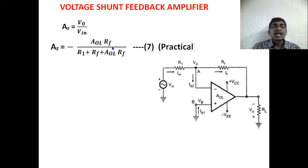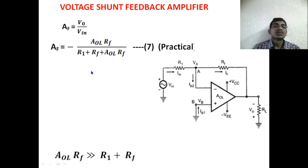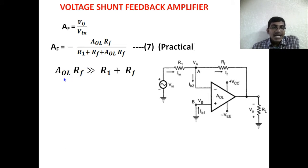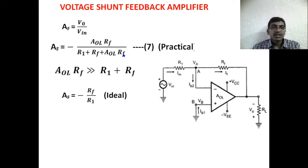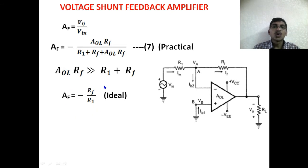We can convert the practical closed loop gain to the ideal case by assuming AOL · RF ≫ R1 + RF. In the denominator, R1 + RF becomes negligible, so the denominator reduces to AOL · RF. Therefore AF ≈ −RF / R1, which is the ideal closed loop voltage gain of the voltage shunt feedback amplifier.